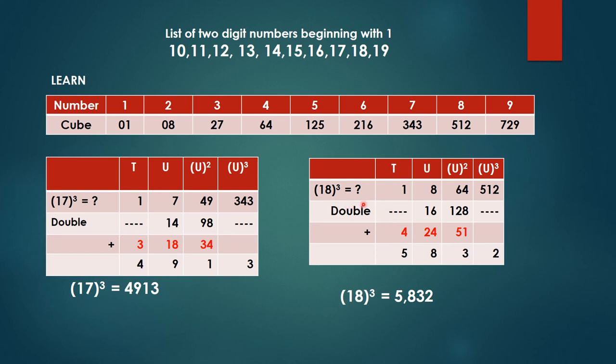Similarly 18 cube. So 1 is in the tens place, 8 is in the units place. 8 times 8 is 64, 8 raised to 3, that is cube of 8 equal to 512.